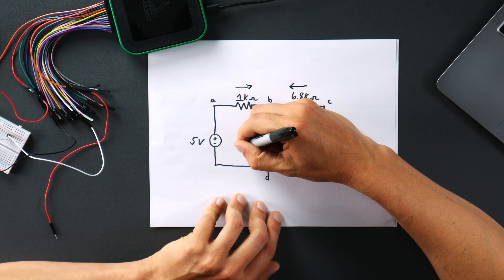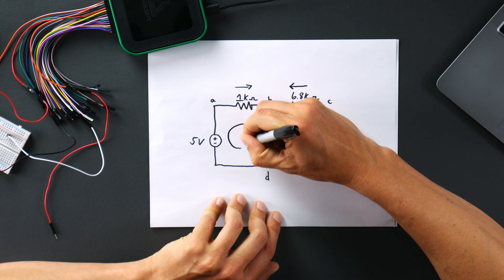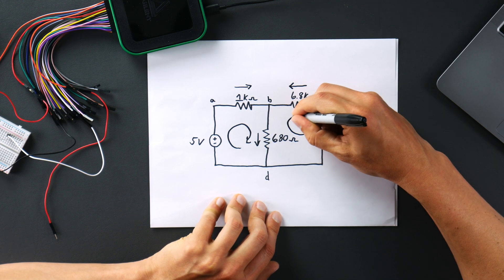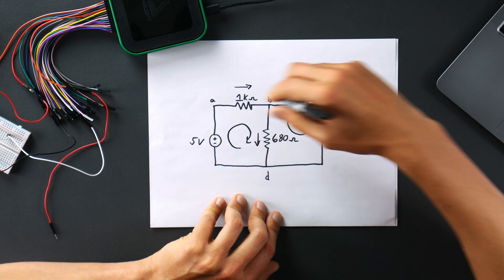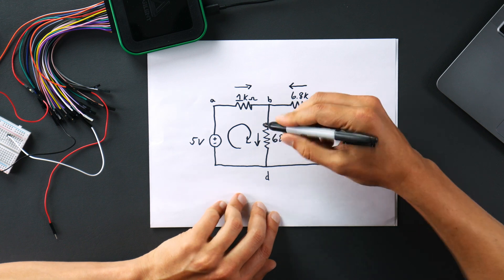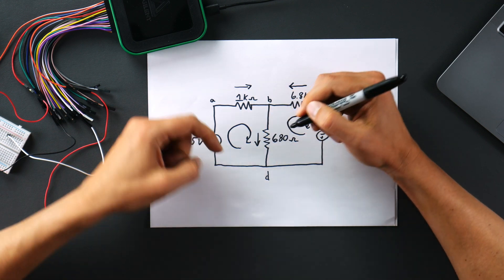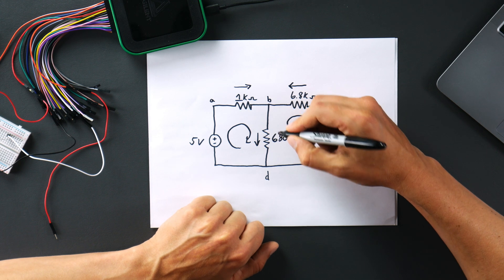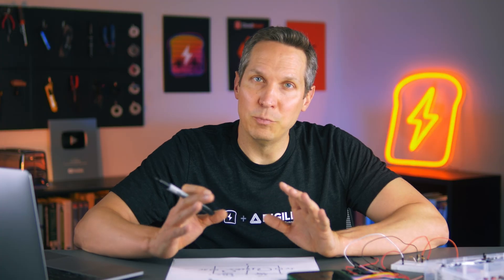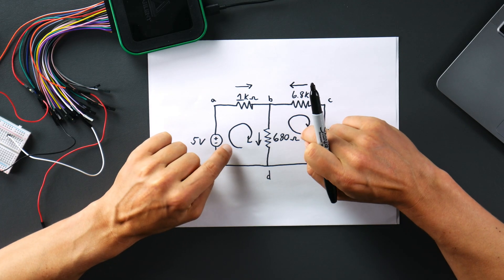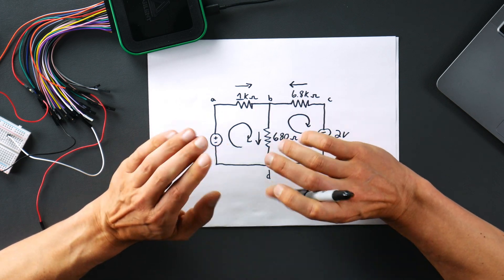KVL will be very similar — you just assume a direction, say we're going this way around a loop, and then do the same for the other loop. One nice thing about this is that if you make that assumption, it becomes conceptually easier to understand that what you have going one direction through one resistor will be subtracted going the other direction through another. So now, before I give you the opportunity to put these equations together and figure out what exactly these values are, let's jump into WaveForms software and provide power to the circuit. Then we'll see what the voltage is at V sub B.